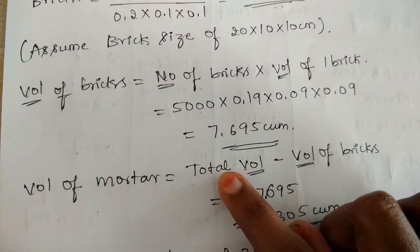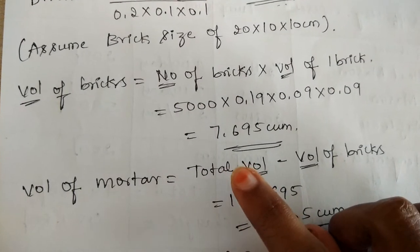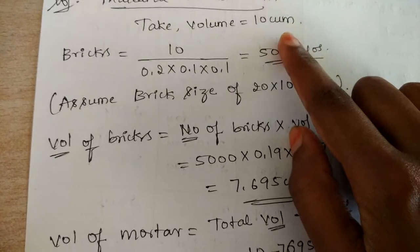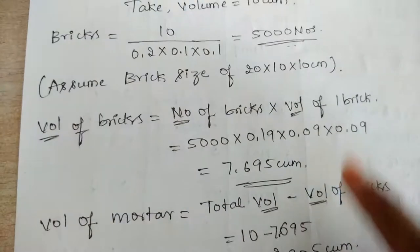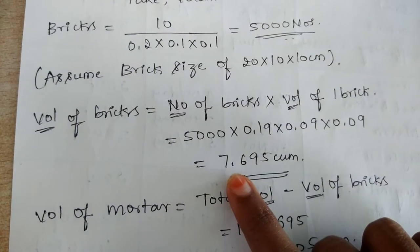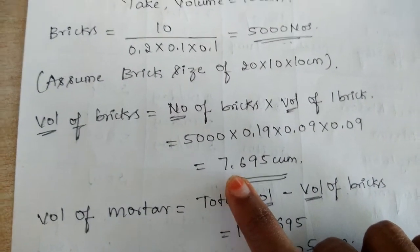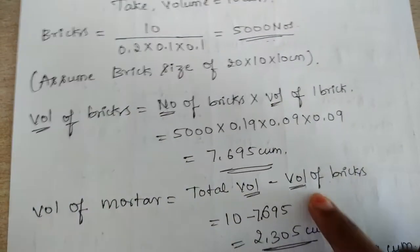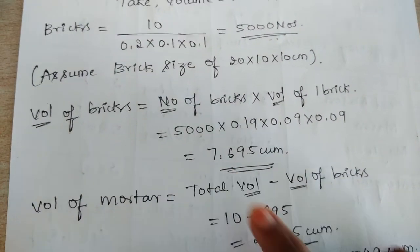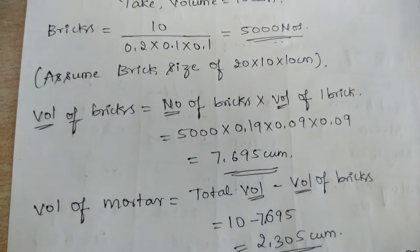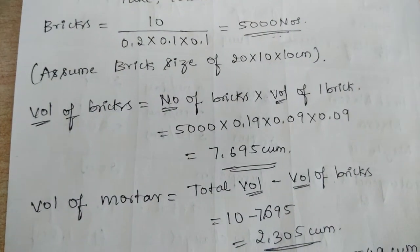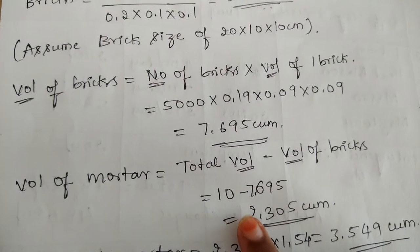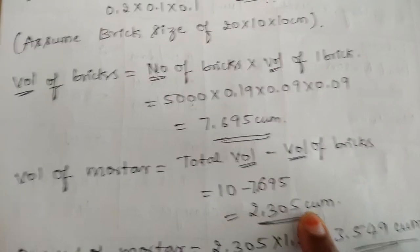To find the volume of mortar, we subtract the total volume we considered earlier from the volume of the total number of bricks. So the total volume is 10 cubic meter minus volume of bricks, that is 7.695. On subtracting these two values we get 2.305 cubic meter.